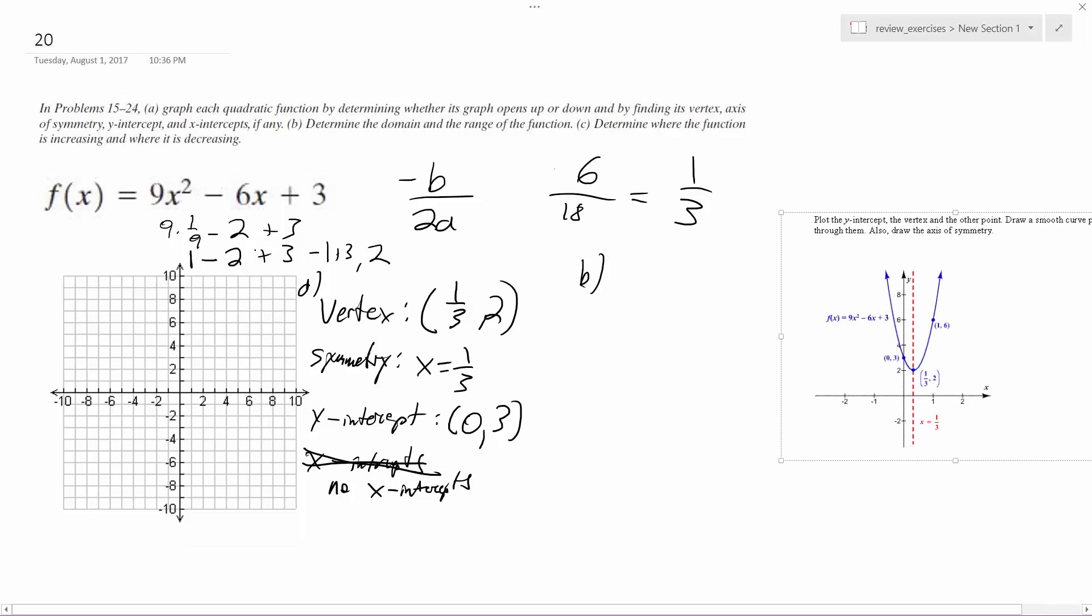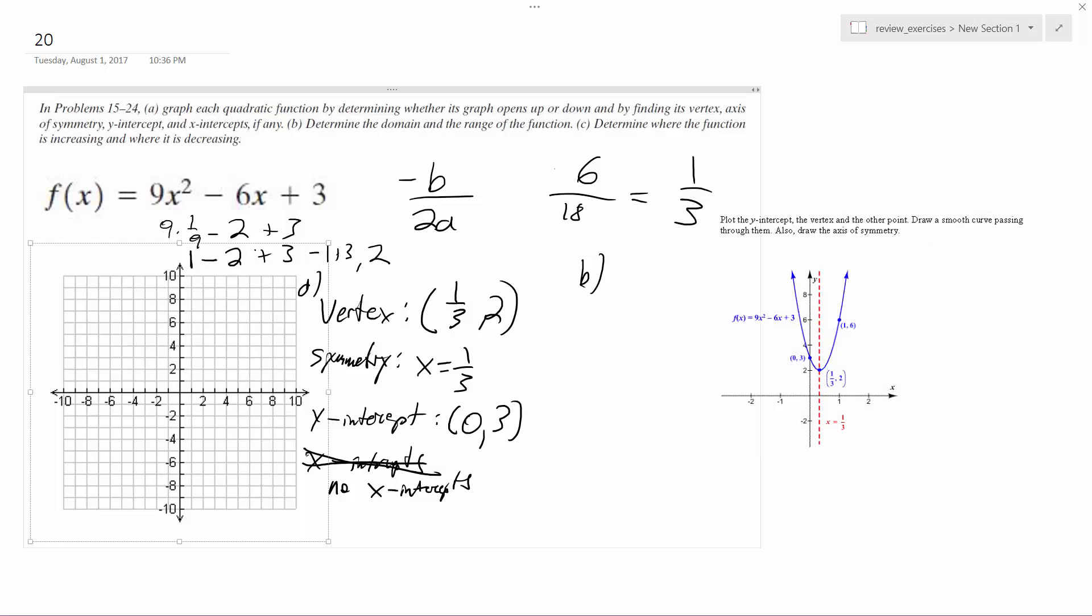So here's the graph. Domain is negative infinity to infinity. Range is from 2 because we're including the y value, and this is actually bracket because it includes 2 up to infinity.